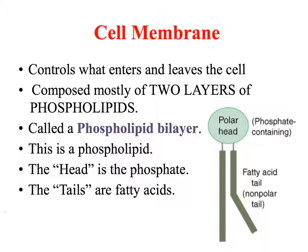The cell membrane is a phospholipid bilayer — two layers — because of its structure. The polar head is circular and contains phosphate, and then we have a fatty acid tail that is non-polar. One aspect wants to interact with water; the other does not. This structure makes our cell membranes very fluid and motile — it's not rigid, not set in place.